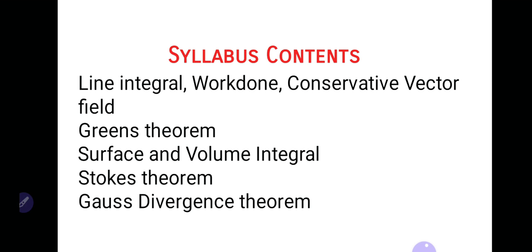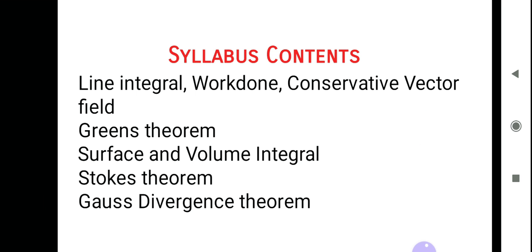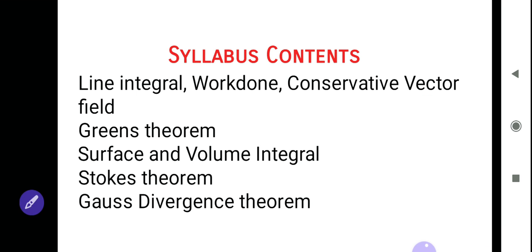In Unit One we already learned when a-bar is solenoidal. If a-bar is a vector field given, we say that a-bar is solenoidal if del dot a-bar equals zero. When a-bar is irrotational, del cross a-bar equals zero.